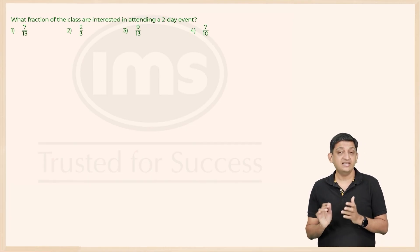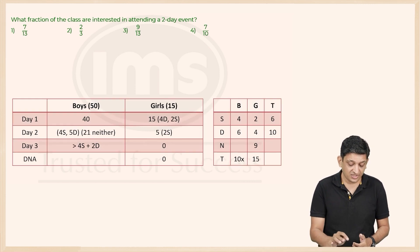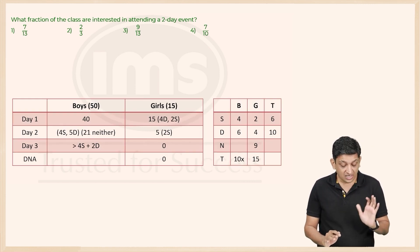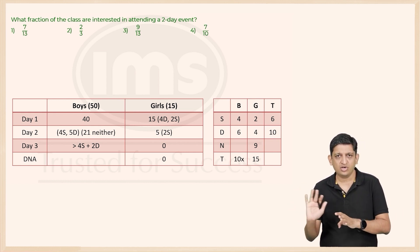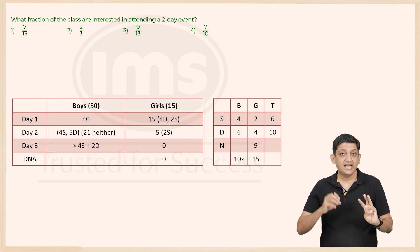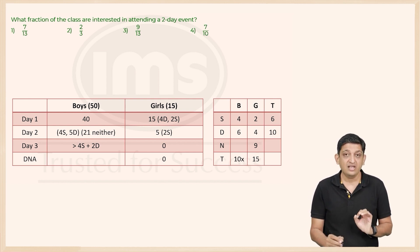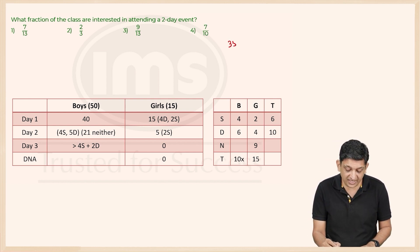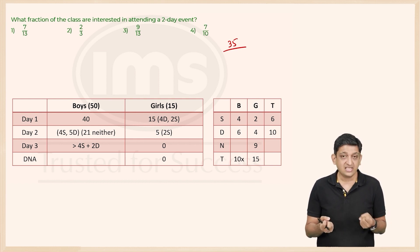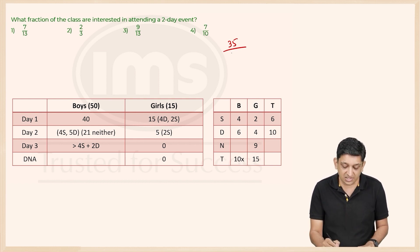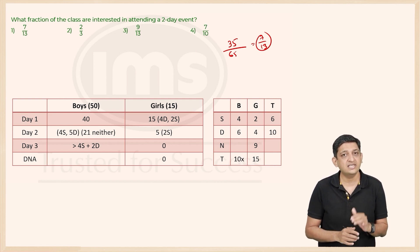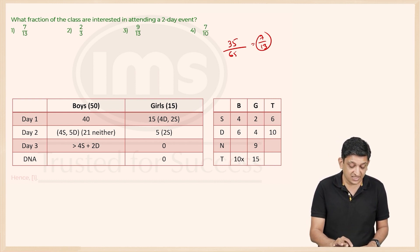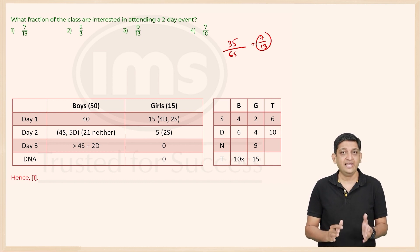Question 3: What fraction of the class is interested in attending a two-day event? For day 2 we have 30 boys and 5 girls, giving 35 people. Total class strength is 50 boys plus 15 girls equals 65. The fraction is 35/65, which simplifies to 7/13. The correct answer is option 1, that is 7/13.